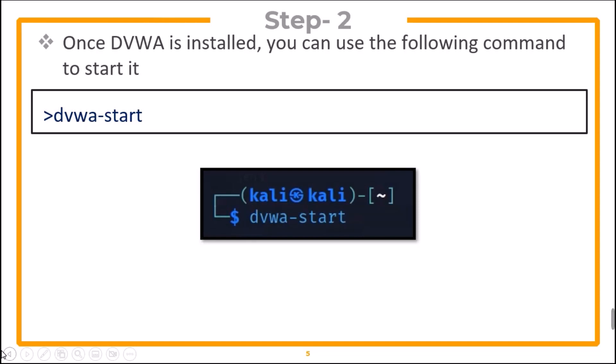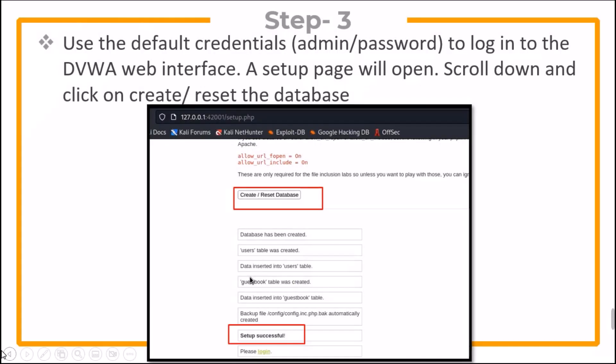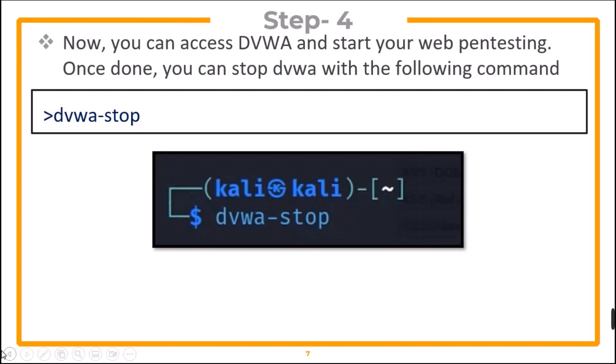Once DVWA is installed, you can use the command dvwa-start. Use the default credentials — admin and password — to log in to the DVWA web interface. A setup page will open. Scroll down and click on 'Create/Reset the Database' and your setup will be complete. Now you can access DVWA and start your web pen testing.